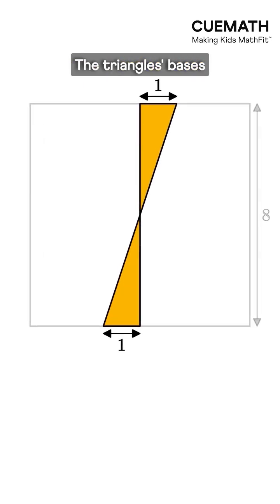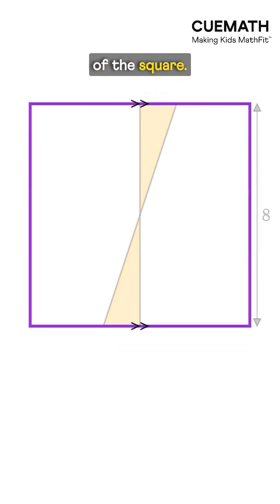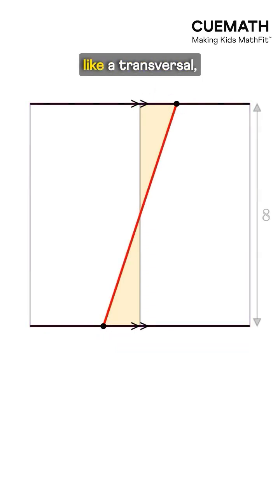Let's see. The triangle's bases are equal and lie on two parallel sides of the square. This line between their endpoints acts like a transversal, making this pair of alternate interior angles equal.